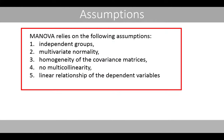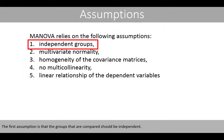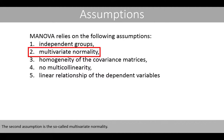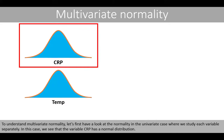MANOVA relies on the following assumptions. The first assumption is that the groups that are compared should be independent. The second assumption is the so-called multivariate normality. To understand multivariate normality, let's have a look at normality in the univariate case, where we study each variable separately.